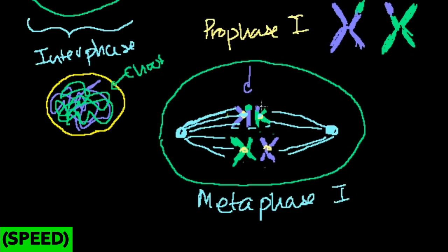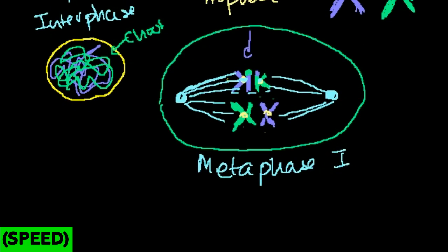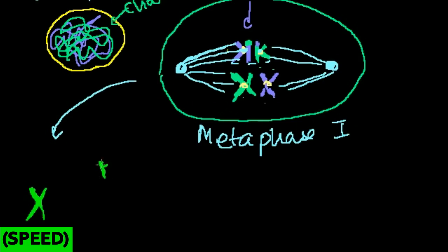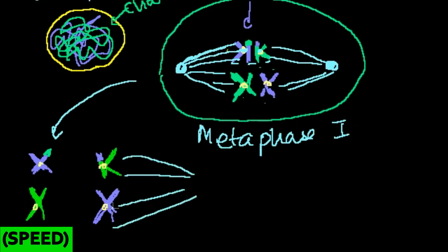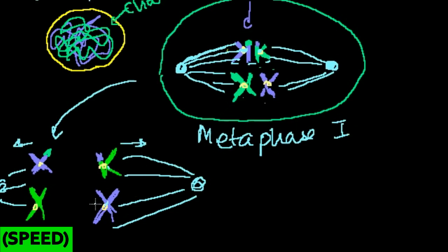Now we're going to enter anaphase 1. Anaphase 1 is interesting because in mitosis anaphase, the sister chromatids separated from each other — that's not the case here. In anaphase 1, just the homologous pairs separate: the chromatids stay with their sister chromatids. So you have the homologous pair being pulled apart, not the actual chromatids splitting. The key difference is you're pulling apart homologous pairs — you're not actually splitting chromosomes into their constituent chromatids.